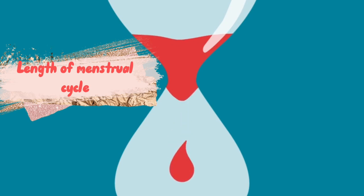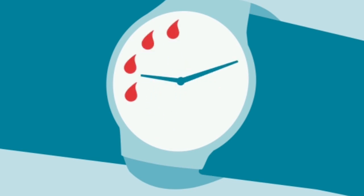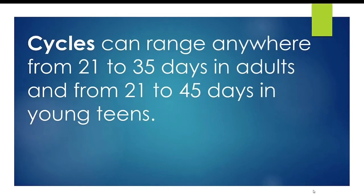Today in this video we will talk about how to calculate the length of your cycle. First of all, you should know the average menstrual cycle is 28 days. The cycle can range anywhere from 21 to 35 days in adults, but it can range up to 45 days in young teens.